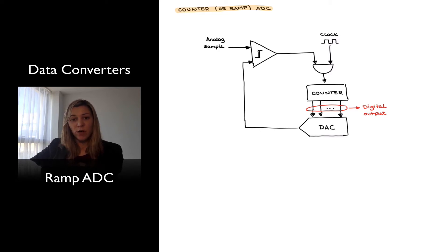It starts counting from zero upwards, and at every step it produces a digital output, which goes from zero to the full scale range when all the bits are equal to one.